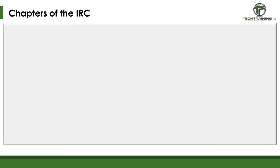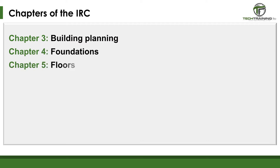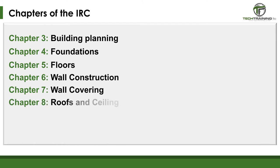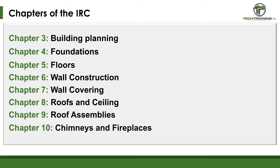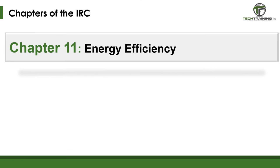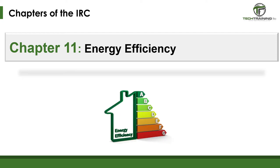Part 3 is Building, Planning, and Construction, consisting of Chapters 3 through 10: Chapter 3, Building Planning; Chapter 4, Foundations; Chapter 5, Floors; Chapter 6, Wall Construction; Chapter 7, Wall Covering; Chapter 8, Roof and Ceiling; Chapter 9, Roof Assemblies; and Chapter 10, Chimneys and Fireplaces. Part 4 is Energy Conservation, covering Chapter 11, Energy Efficiency. This section is the responsibility of the Residential Energy Committee and comes directly from the International Energy Conservation Code.